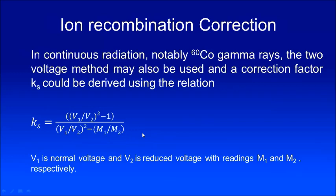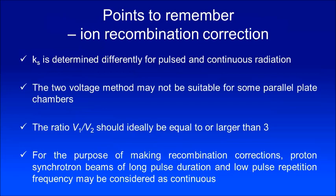Some points to remember for ion recombination correction: K_s is determined differently for pulsed and continuous radiation. The two-voltage method may not be suitable for some parallel plate chambers. Importantly, V1/V2 should ideally be equal to or larger than 3 — so use 300 and 100, or 400 and 100. For the purpose of recombination correction, proton synchrotron beams of long pulse duration and low pulse repetition frequency may be considered as continuous beams.